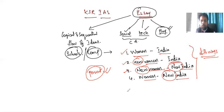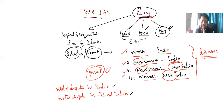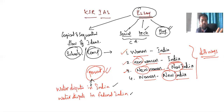Here is the problem. For example, water disputes. Water disputes in India is a problem. Next, water disputes in federal India. Do you think these two essays have the same approach? No. Because if you have content, you have content more or less — that means almost 80 to 85%, around 75 to 80% of your content overlaps. But the way you present differs. You don't have the same approach in that presentation.